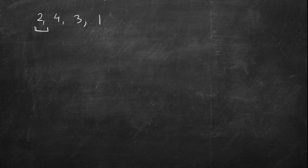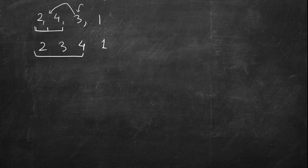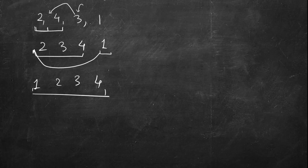You see that 4 is more than 2, so it's in the correct position. Then you come to 3 and see that 3 is less than 4 and more than 2, so you put 3 between 2 and 4. Now it becomes 2, 3, 4, 1. Then you look at 1 — 4 is more, 3 is more, 2 is more — so 1 should come first, making it 1, 2, 3, 4.